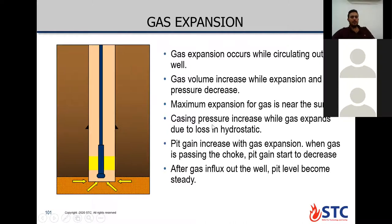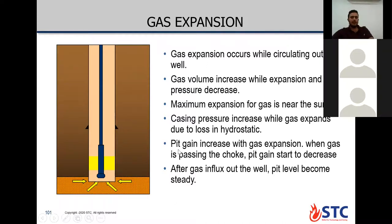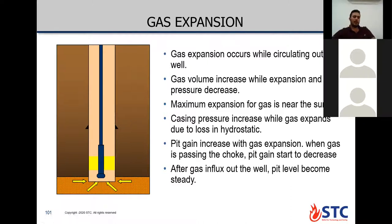The maximum expansion for gas is nearer to the surface. Casing pressure increases while gas expands due to loss in hydrostatic, then starts to decrease after gas influx is out of the well, so the bit-level pressure becomes steady.